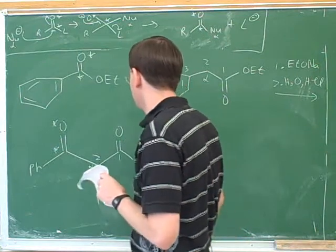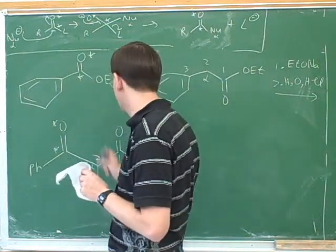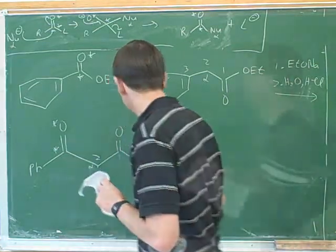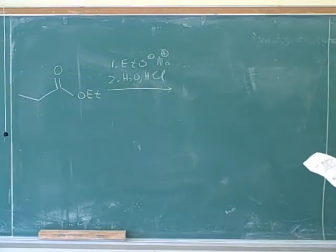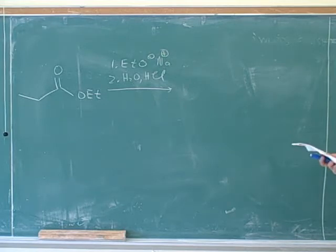When would we use this in synthesis again? When we're trying to make a beta-carbonyl ester, or a 1,3-dicarbonyl. Let's draw the product from this reaction, and like we were doing last time, we'll skip the mechanism, and let's try to just go straight to the final product.